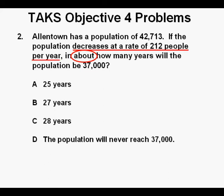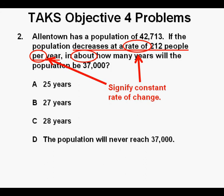Also, we have this phrase, decreases at a rate of 212 people per year. And within this phrase, particularly the words rate of and per, these words tell us that there is a constant or linear rate of change.